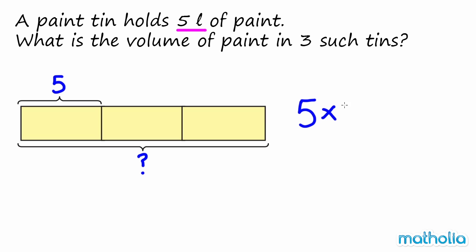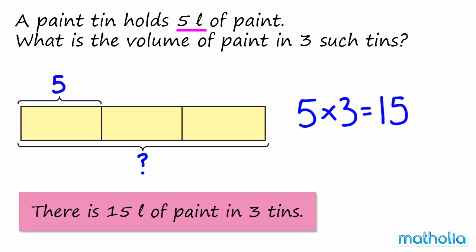Five times three equals fifteen. So there is fifteen litres of paint in three tins.